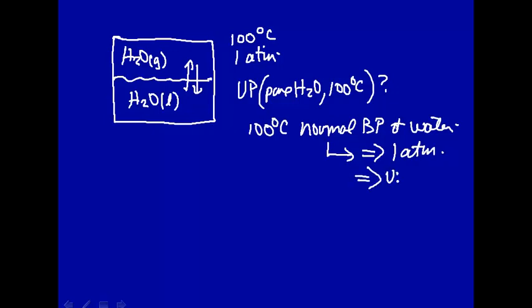So this implies that the vapor pressure of water at 100 degrees C is 1 atmosphere. So if you had pure water down here and you were at the boiling point at 100 degrees, the vapor pressure of water would be 1 atmosphere. It would be boiling, in other words, at equilibrium.